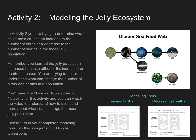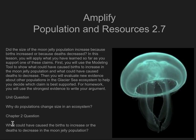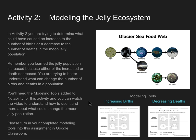Chapter 2, Lesson 2.7, Activity 2 for Populations and Resources. You really need to start with the chapter question. So the Chapter 2 question was: what could have caused the births to increase or the deaths to decrease in the moon jelly population? That's what we're looking at in this activity. You're going to be using two tools attached to this screen, and you'll be turning the modeling tools into Google Classroom: the Increasing Birth Modeling Tool and the Decreasing Deaths Modeling Tool. You'll get those out of this slide in Google Classroom on the Google Slides.